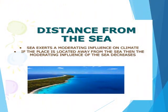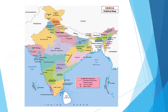Distance from the Sea: the sea exerts a moderating influence on the climate as water has a high specific heat capacity, so it takes time to get heated or cooled down. Due to land and sea breeze, places near the sea like Mumbai, Panaji, Chennai, and Kolkata experience maritime climatic conditions throughout the year, so there is no clear-cut winter season.